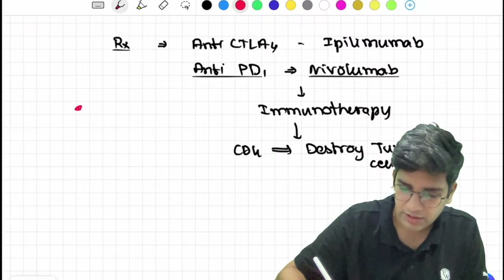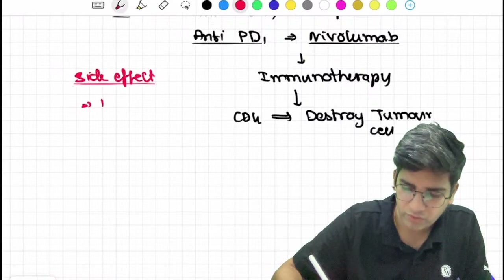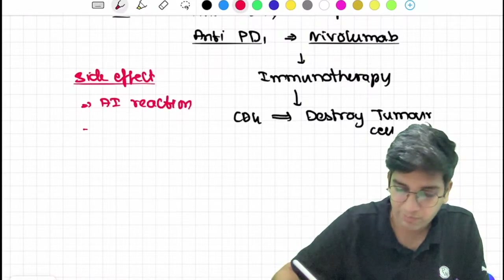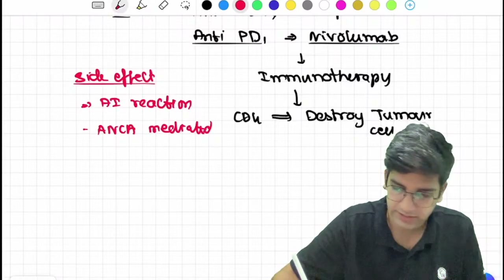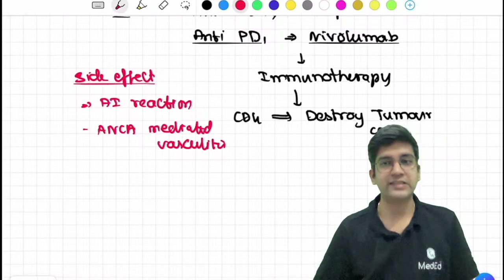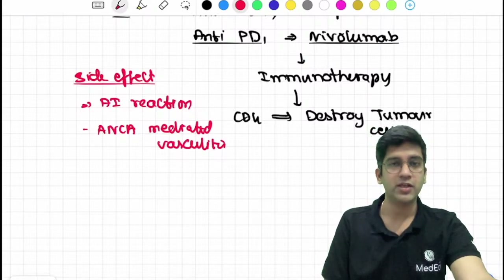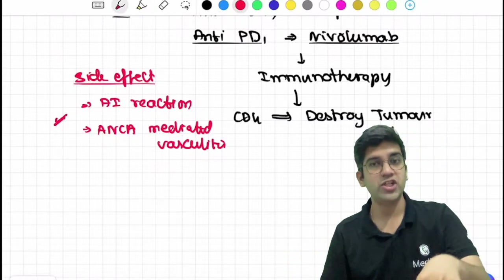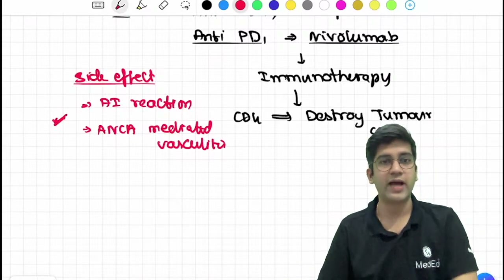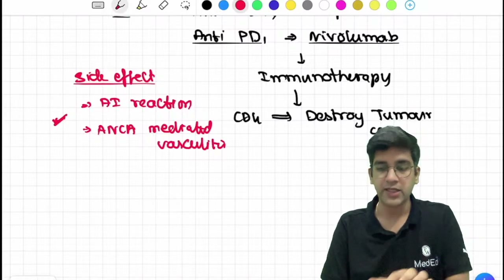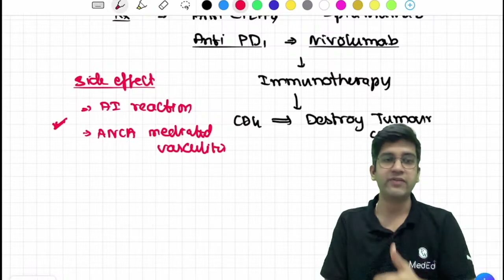There is one big side effect of immunotherapy: because this is the same mechanism by which I prevent autoimmune reactions, there will be lots of autoimmune reactions in patients. One important side effect is ANCA-mediated vasculitis. We also have a congener called pembrolizumab - all are anti-PD1 or anti-PD-L1 analogs and are very efficient these days. ANCA stands for anti-neutrophilic cytoplasmic antibodies, which we will read about in the vasculitis chapter.